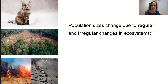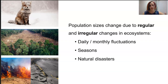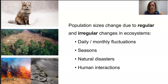Population sizes change frequently, due to regular and irregular changes in the abiotic and biotic conditions present in an ecosystem. You might be talking about daily and monthly changes — the sun goes down, things happen, then there are seasons throughout the year — but then there are also natural disasters and human interactions, including fires, floods, droughts, and human interaction of many kinds.